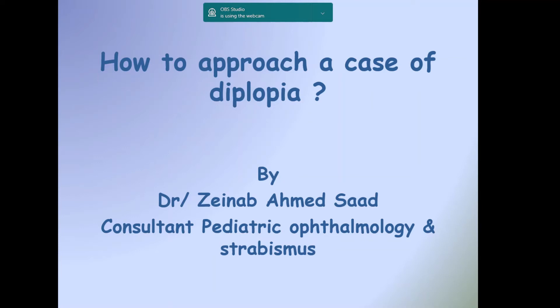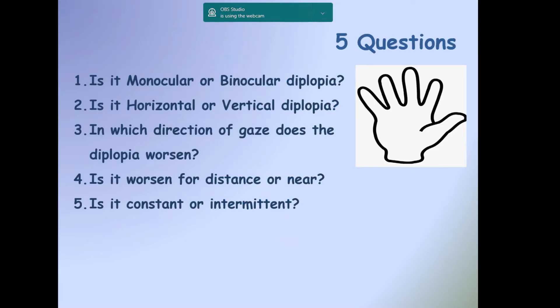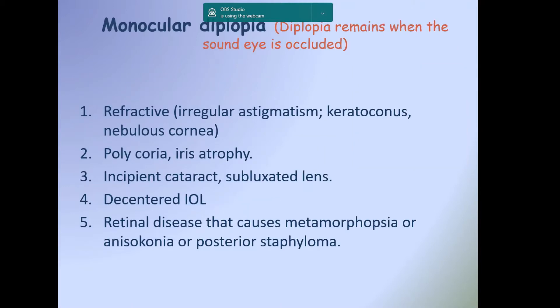Hello everyone, I am Zainab Ahmad from Saad Memorial Institute of Ophthalmic Research. Our topic is how to approach a case of diplopia. We have to ask ourselves five questions: Is it monocular or binocular diplopia? Is it horizontal or vertical diplopia? In which direction of gaze does the diplopia worsen? Is it worse for distance or near? Is it constant or intermittent?